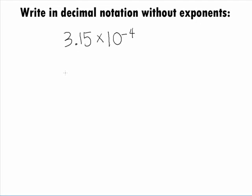In this example, we want to write the number 3.15 times 10 to the negative 4 power in decimal notation without exponents.